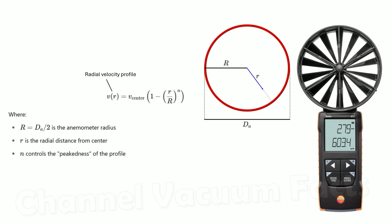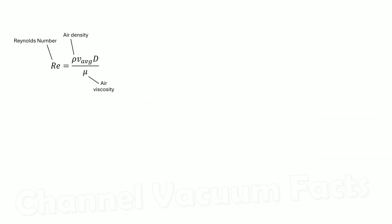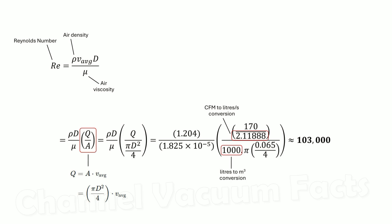This power law profile is a reasonable first-order approximation. The value of n is determined by the level of turbulence in the flow, which we can easily calculate from the Reynolds number. The value is about 103,000 and deep in the turbulent regime, as you'd expect.